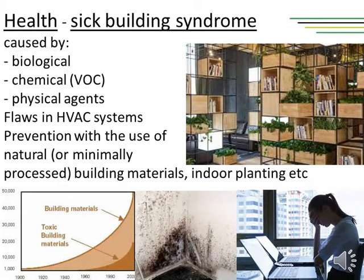Besides compromising the environment, some materials used in buildings can be harmful to our health. We can distinguish biological agents — bacteria, fungi, molds and spores; chemical agents — different chemical compounds, heavy metals, fibers and particles; and physical agents — ion imbalances, electromagnetic fields, radio frequency radiation, etc. Sick building causes are frequently pinned to flaws in heating, ventilation and air conditioning systems. Up to 30% of new and remodeled buildings worldwide may be subject to complaints related to poor indoor air quality. This can be prevented with natural and minimally processed building materials, increased ventilation rates, proper maintenance of HVAC systems, replacement of water or mold-stained ceiling tiles and carpeting, and indoor planting of toxic-absorbing plants.